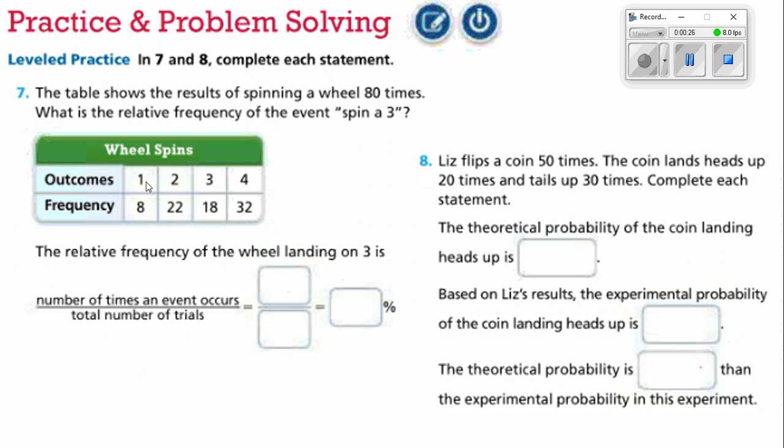We see here 1 came up 8 times out of that 80 times, 2 came up 22 times, 3 came up 18 times, and 4 came up 32 times. That's weird. You would expect that each number would probably come up about 20 times because if you divide 80 by 4, you get 20.